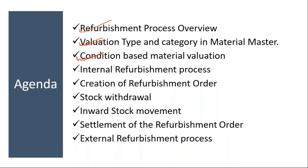Then we will proceed with internal refurbishment — that means refurbishment activity carried out within the company premises. We will create a refurbishment order, see stock withdrawal, then see the inward stock movement, and finally settlement of the refurbishment order. After that we will go for the external refurbishment process.